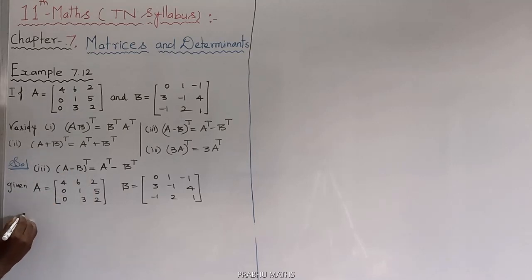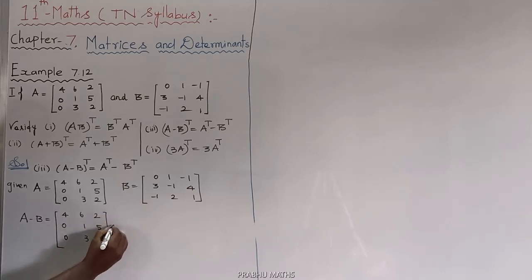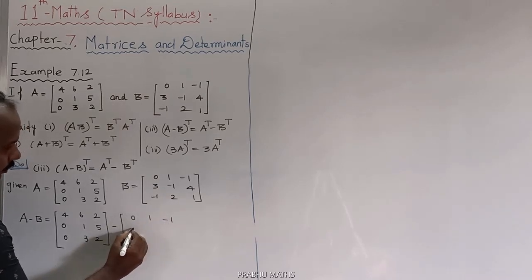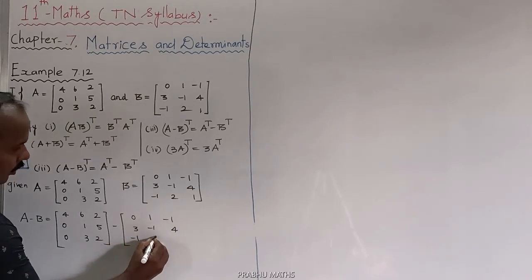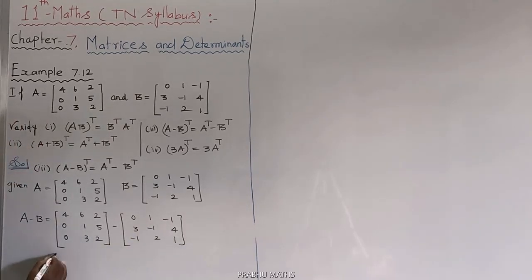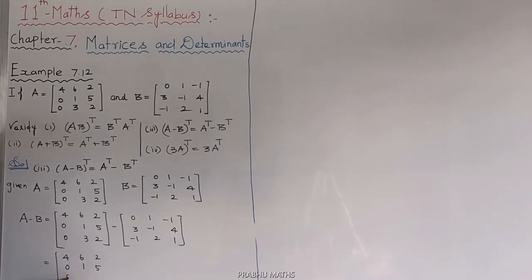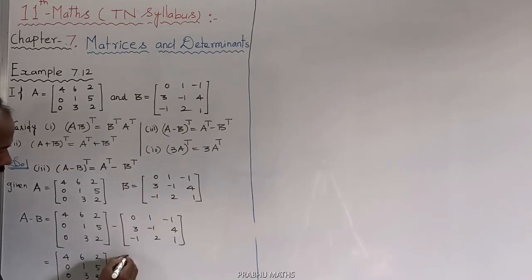To find A minus B: matrix A is [4, 6, 2; 0, 1, 5; 0, 3, 2], minus matrix B which is [0, 1, -1; 3, -1, 4; -1, 2, 1]. So A minus B is matrix A [4, 6, 2; 0, 1, 5; 0, 3, 2] minus, with the inside multiplication giving [0, -1, 1; -3, 1, -4; 1, -2, -1].